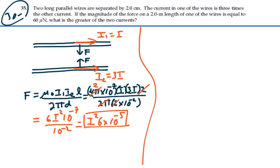Well we're told, this force should be 60 micro newtons. So this force, which is I² times 6 times 10⁻⁵, should be equal to 60 times 10⁻⁶ newtons.